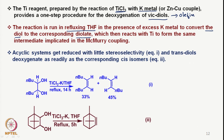If we start with acyclic systems, we can see that there is not much stereoselectivity observed. Trans-diols deoxygenate as readily as the corresponding cis isomer — for example, a mixture of cis and trans diols directly gives the corresponding olefin. A stereo-chemically defined diol leads to 33% formation of cis olefin and 45% formation of the trans olefin, indicating that the mechanism must be proceeding in a non-stereoconservative fashion.